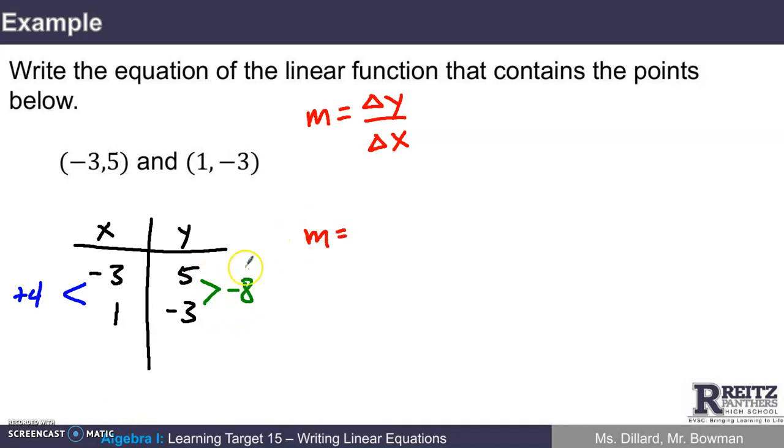So the slope is change in y over change in x, negative 8 over positive 4, which divides out to negative 2.